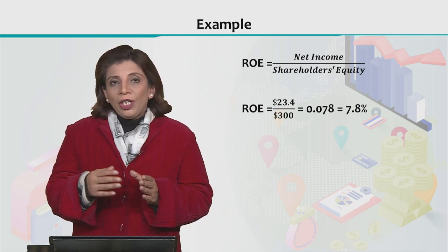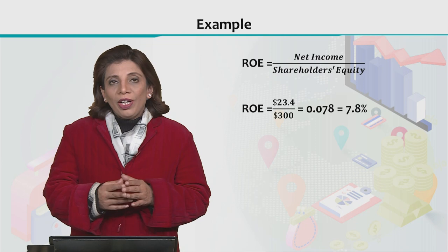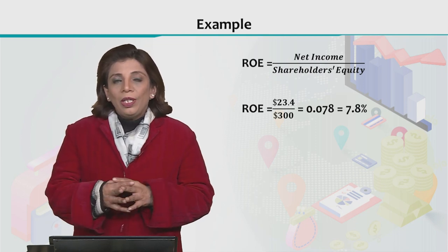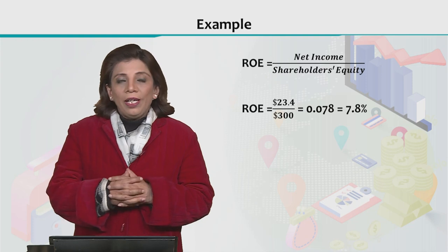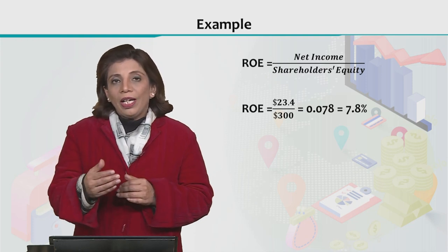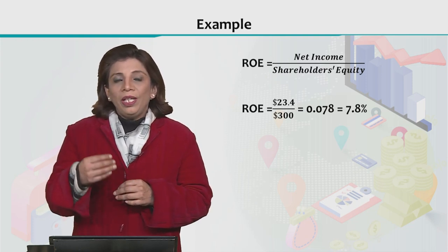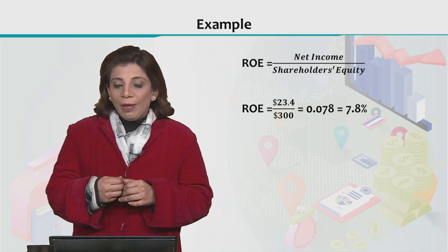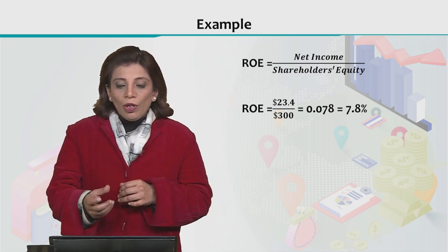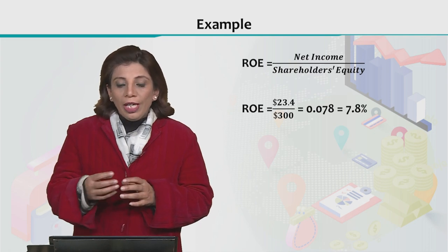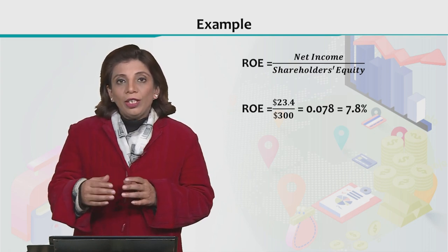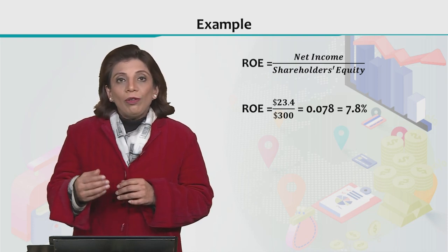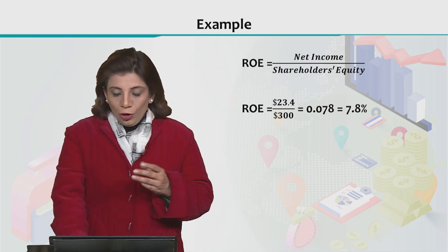When I explained the different types of financial statements, I discussed company ABC's data. The net income is found in the income statement and the shareholder's equity is found in the balance sheet. If we express the value of ROE in percentage form, it turns out to be 7.8%.